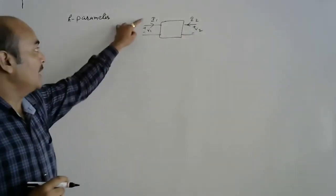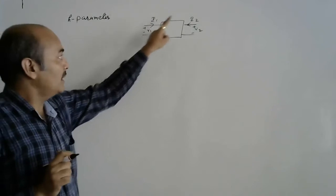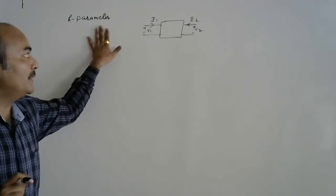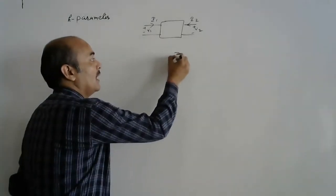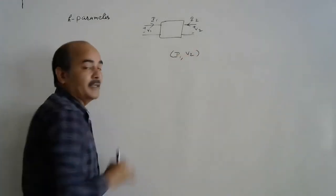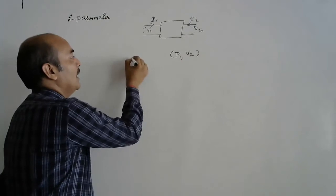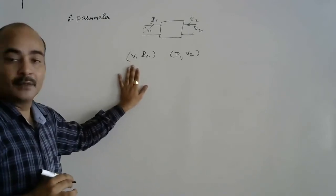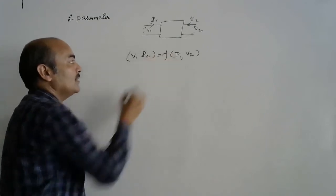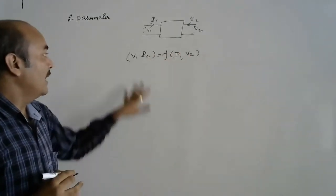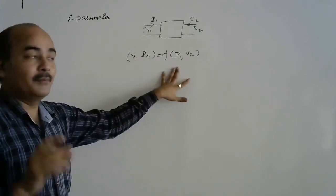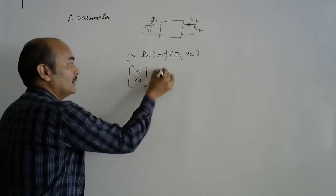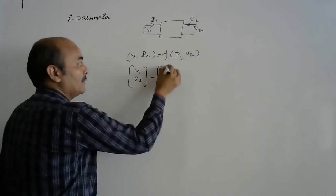There are four variables: I1 and V1 are input current and input voltage, and I2 and V2 represent output current and output voltage. In H parameters, input current I1 and output voltage V2 are the independent variables, while input voltage V1 and output current I2 are the dependent variables — V1 and I2 are functions of I1 and V2.